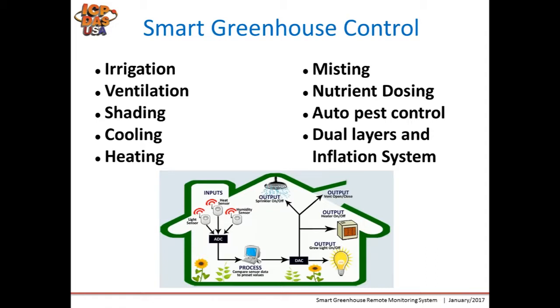There are types of automated systems to help control the environment in the greenhouse — for example, irrigation, shading, cooling, heating, nutrient dosing, and auto pH control.